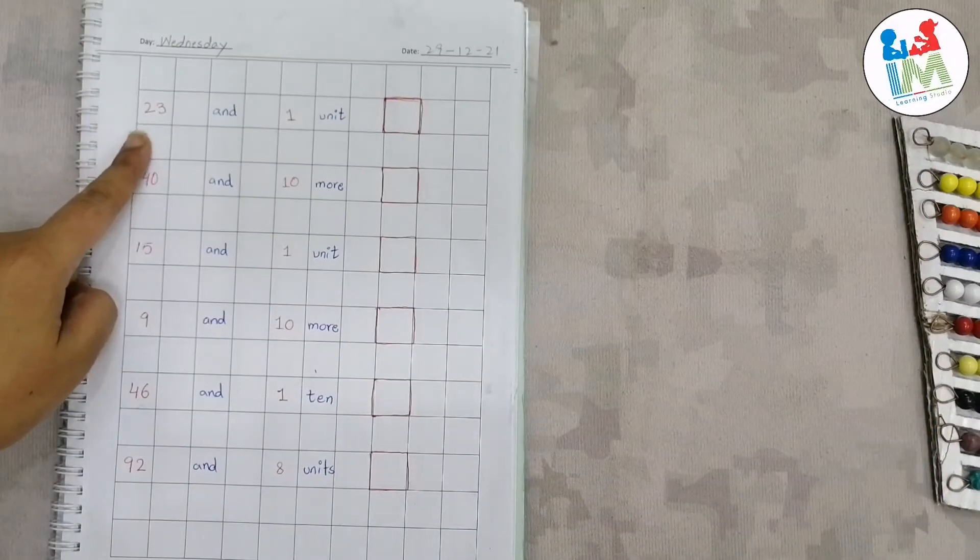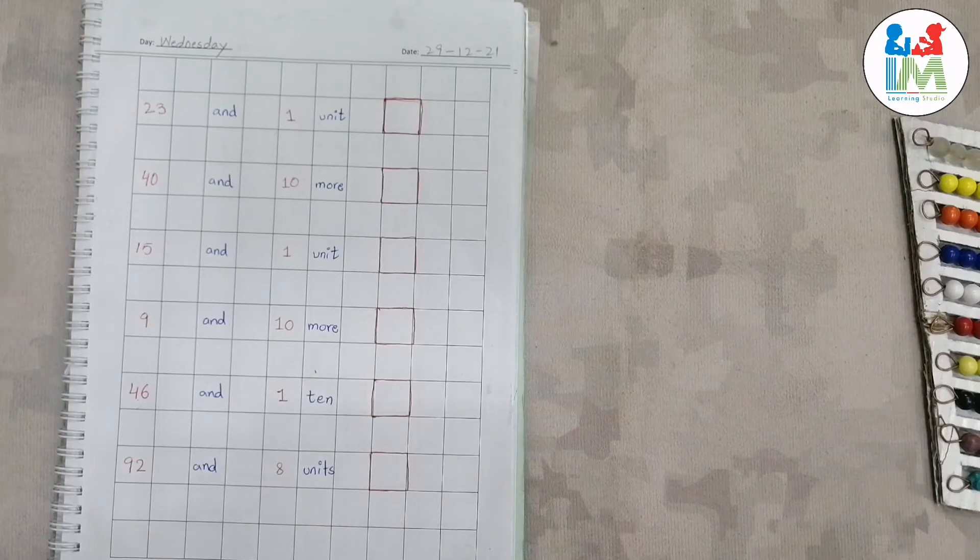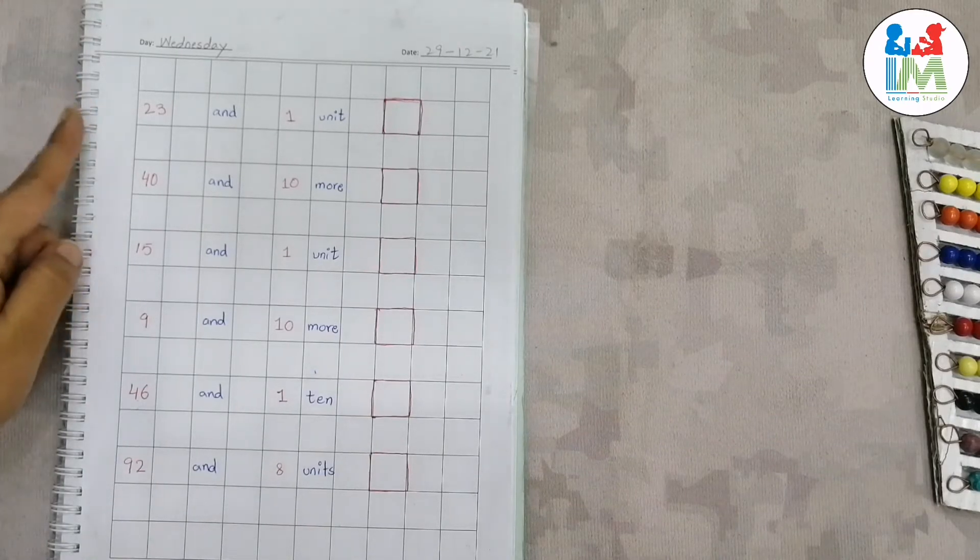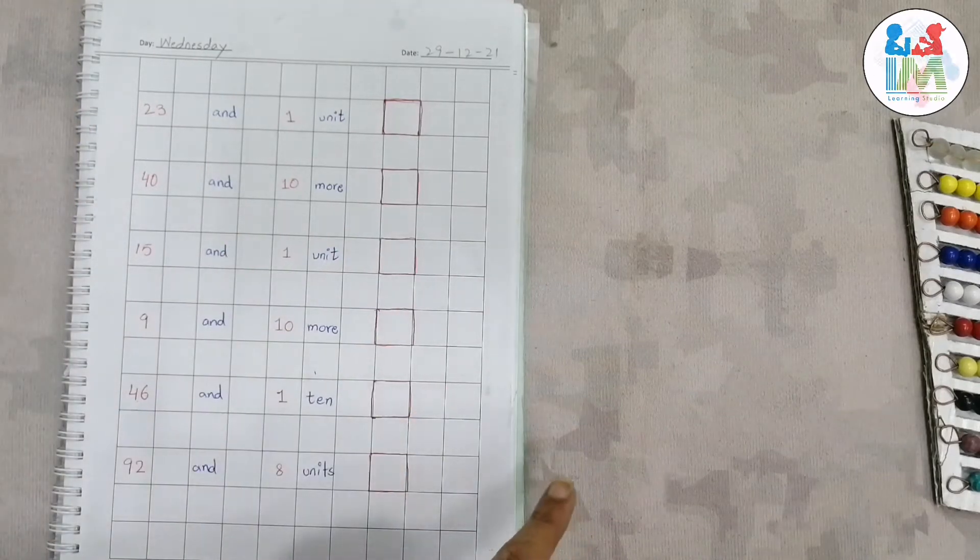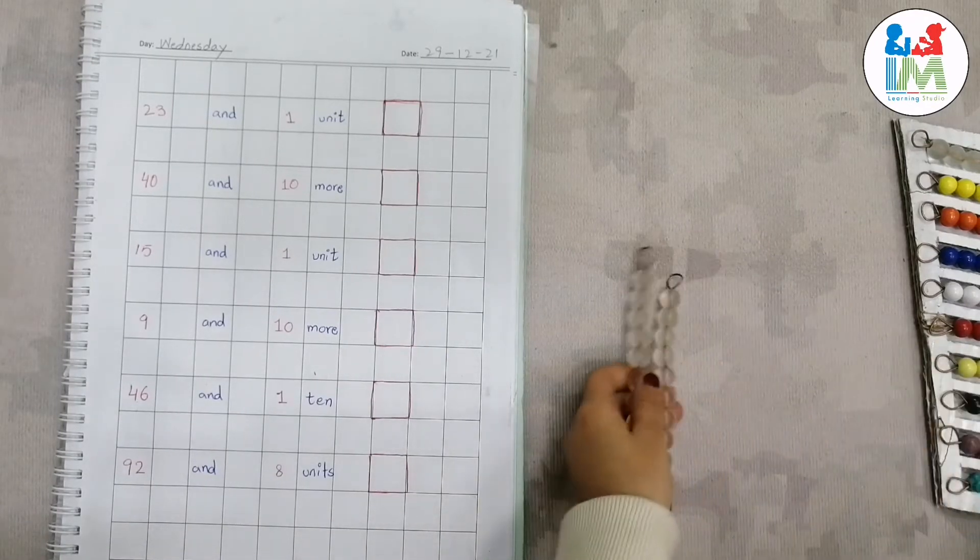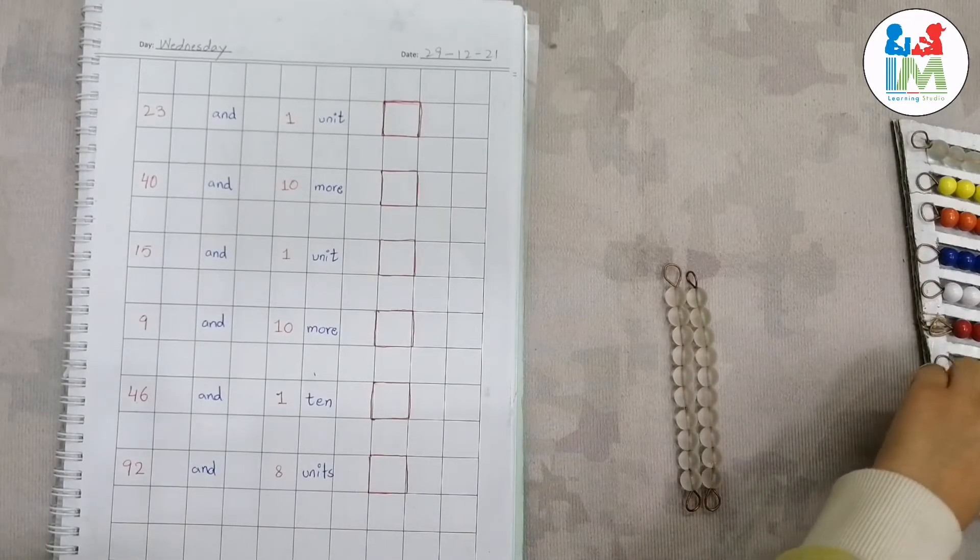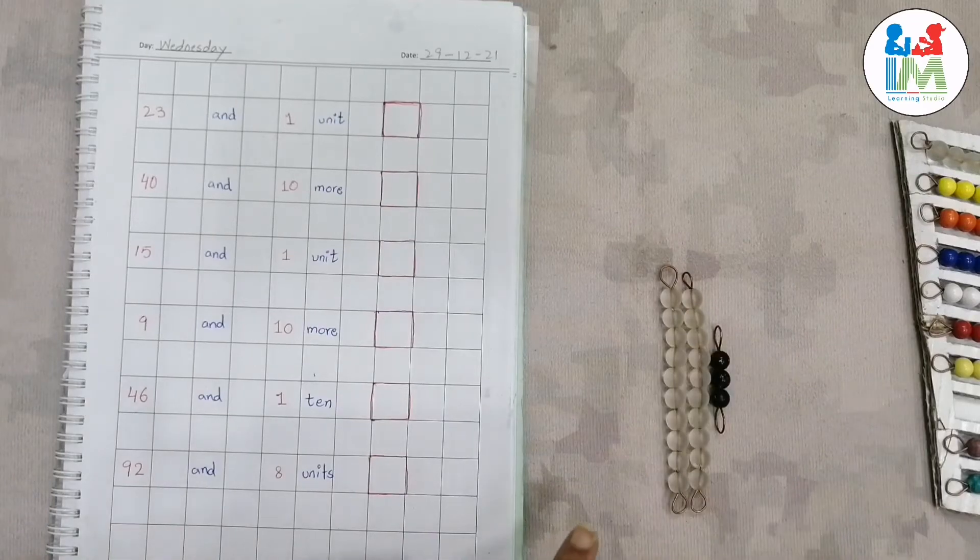So let's start our today's activity. See, how many tens in 23? Two tens. And how many units in this number? Three units. Can you make 23 with this? Okay, yes, two tens and place three units. Yes, this number is 23.